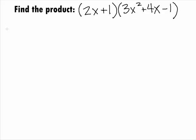In this example, we want to find the product of the binomial 2x plus 1 times the trinomial 3x squared plus 4x minus 1.